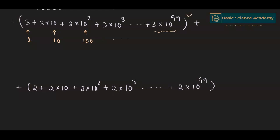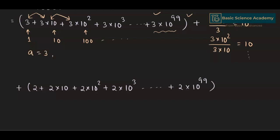In the first series, the ratio of each consecutive term is constant and equals 10. For the first two consecutive terms, the ratio is (3×10) / 3 = 10. Also, for the second and third terms, (3×10²) / (3×10) = 10, and so on. Hence, this sum is in geometric progression where the first term a = 3, common ratio r = 10, and number of terms n = 100. We have 100 digits.